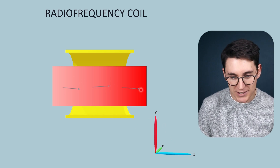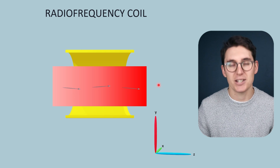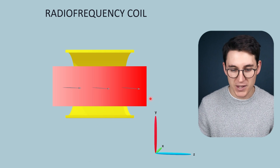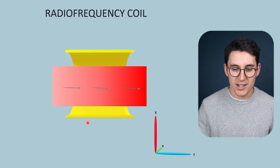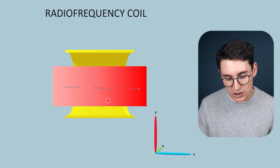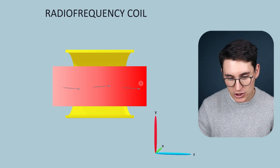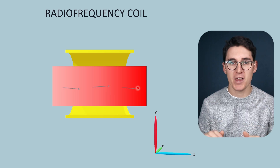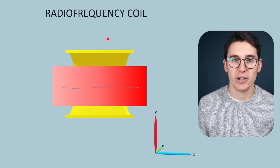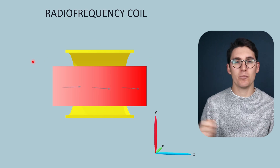Think of each hydrogen proton or net magnetization vector as a child swinging on a swing at a set frequency — they're all swinging at different frequencies. The radio frequency coil generates magnetic pulses in the transverse plane — like dads at the swings pushing their children. The dads are closing their eyes and pushing at a set frequency — that's the radio frequency pulse. Only the children swinging at the same frequency as the dads are pushing will get more and more energy and swing further out. Those swinging at a different frequency won't match up and won't gain any energy. The same thing happens with the radio frequency pulse — only hydrogen atoms processing at the exact same frequency as the radio frequency pulse will gain more and more energy.